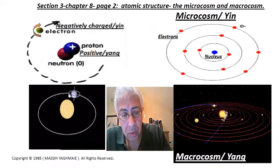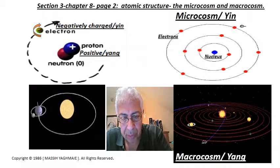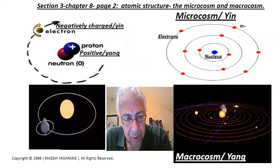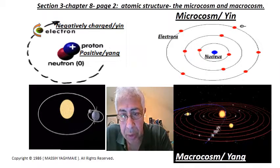For example, in the macrocosm, in the planetary system, you have the Sun in the center with the Earth going around it.